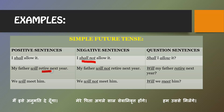'My father will retire next year' is a positive sentence. 'My father will not retire next year' is the negative form. 'Will my father retire next year?' is the question form. This is how we make positive, negative, and question sentences in simple future tense.